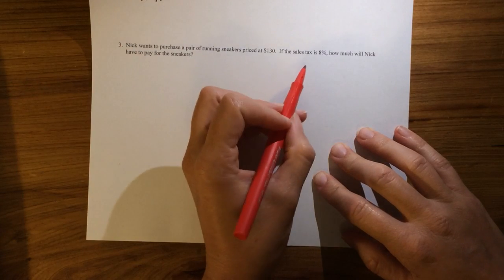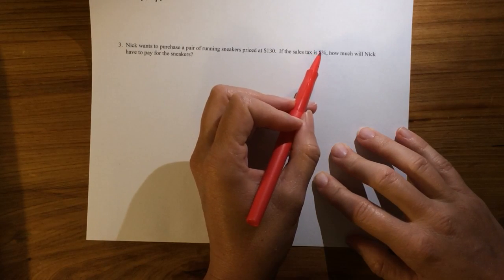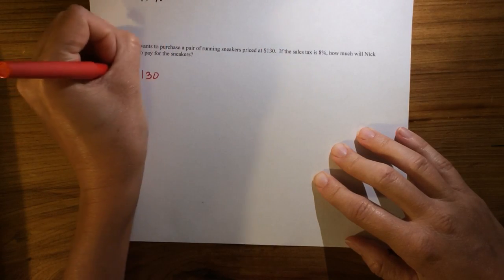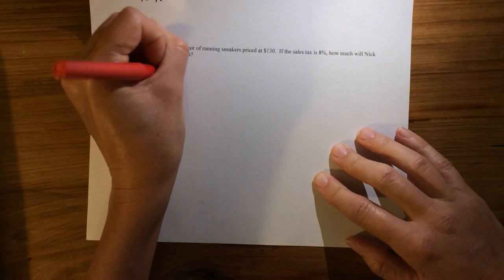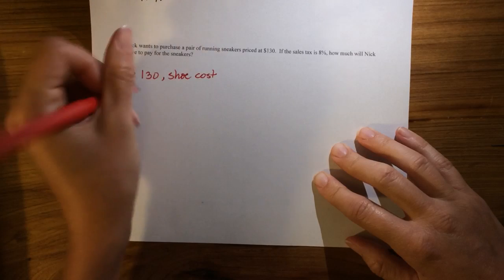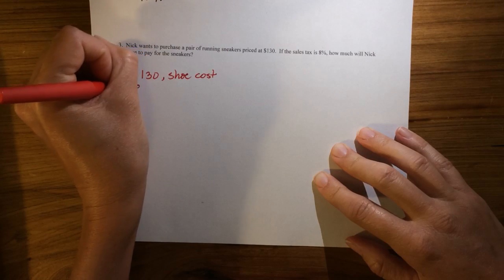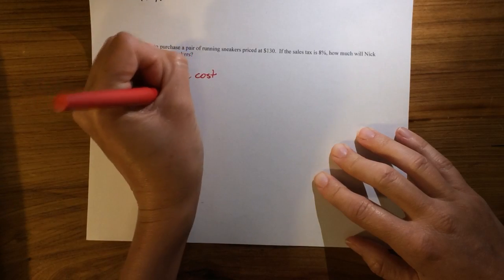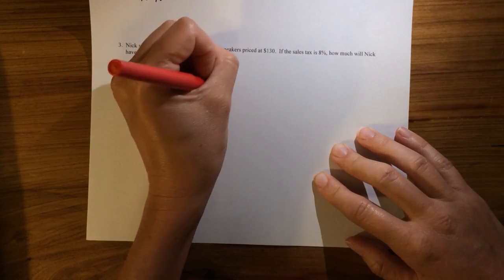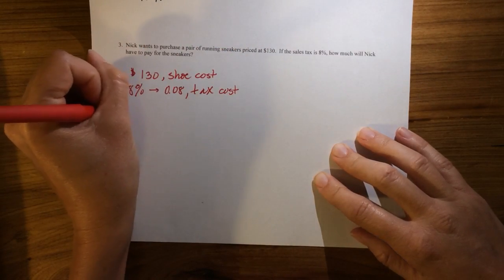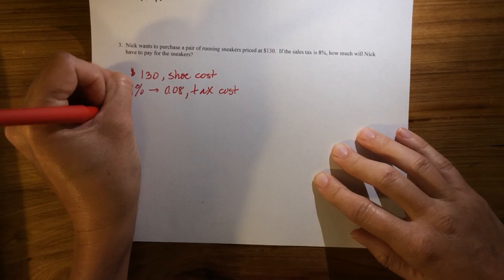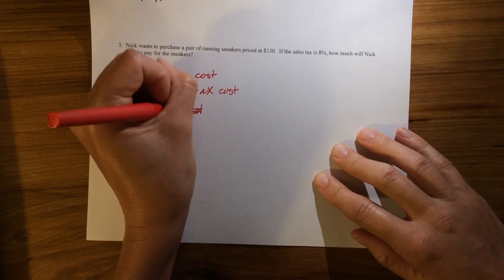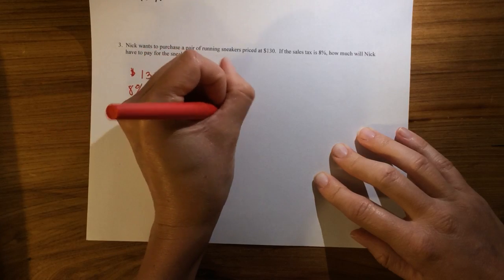So here, I know that sales tax is 8%, so tax is on top of the $130. So if I have $130, that's the shoes, right? Shoe cost. 8%, which translates to 0.08, is the tax cost. Well, then the entire cost, so total cost, is equal to the shoe plus tax.